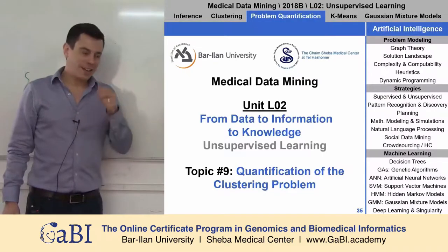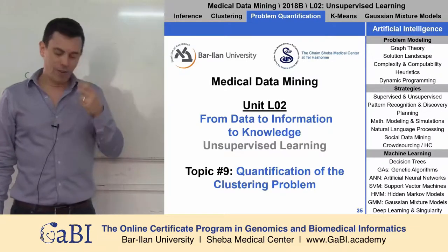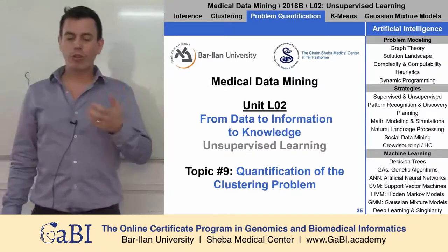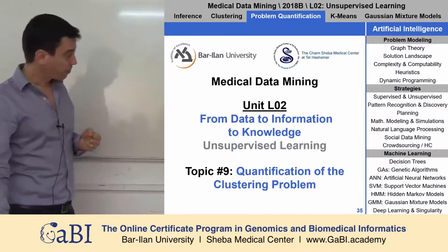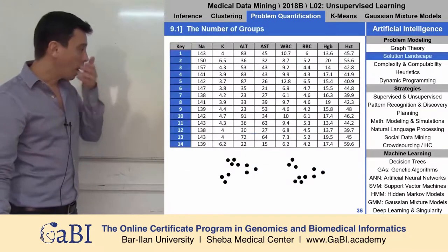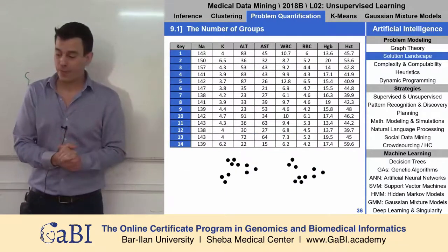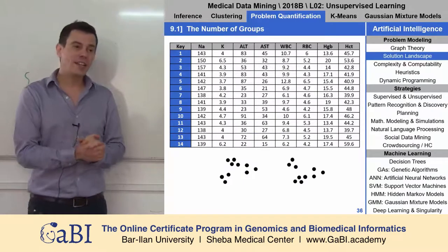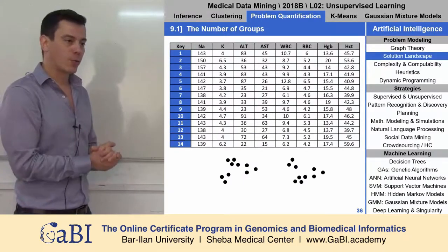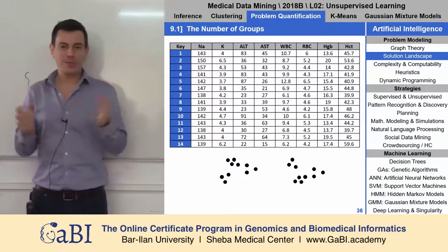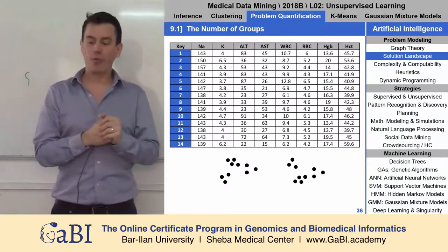Because this is something that is very computational, it is colored in blue. So first question: what is the number of groups? I'm now going to numbers, to mathematics. What is the number of groups?